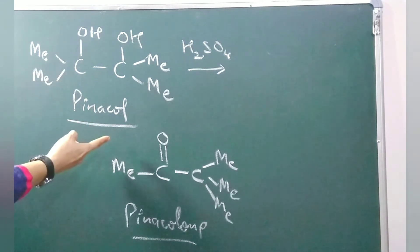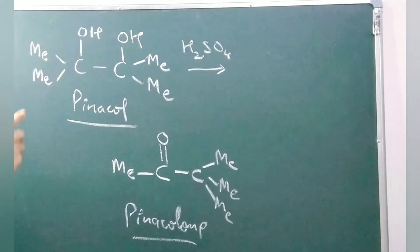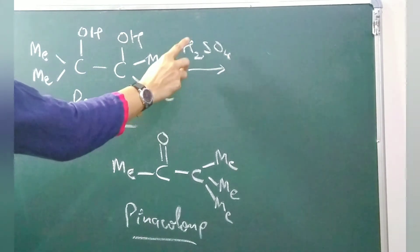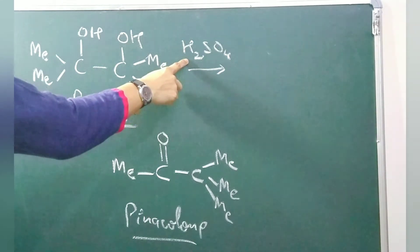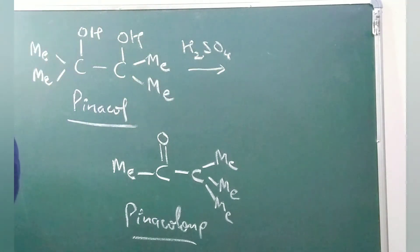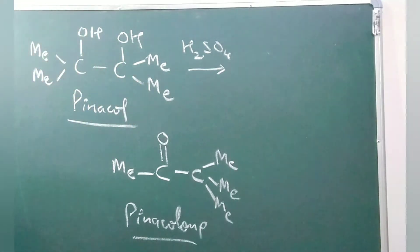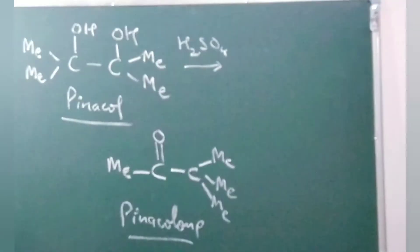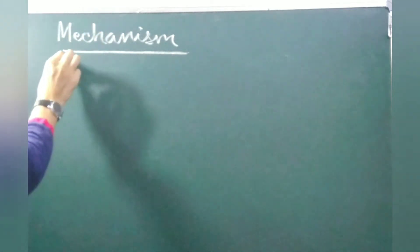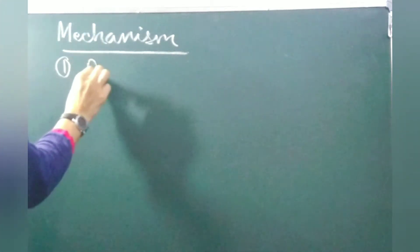Now we will talk about the mechanism. Here we are taking acid. Whenever there is an acid, how can you forget about carbocation? That means there will be formation of carbocation. So let's see the mechanism. Remember there is acid, there will be formation of carbocation. If carbocation formation is taking place, that means the first step will be protonation.